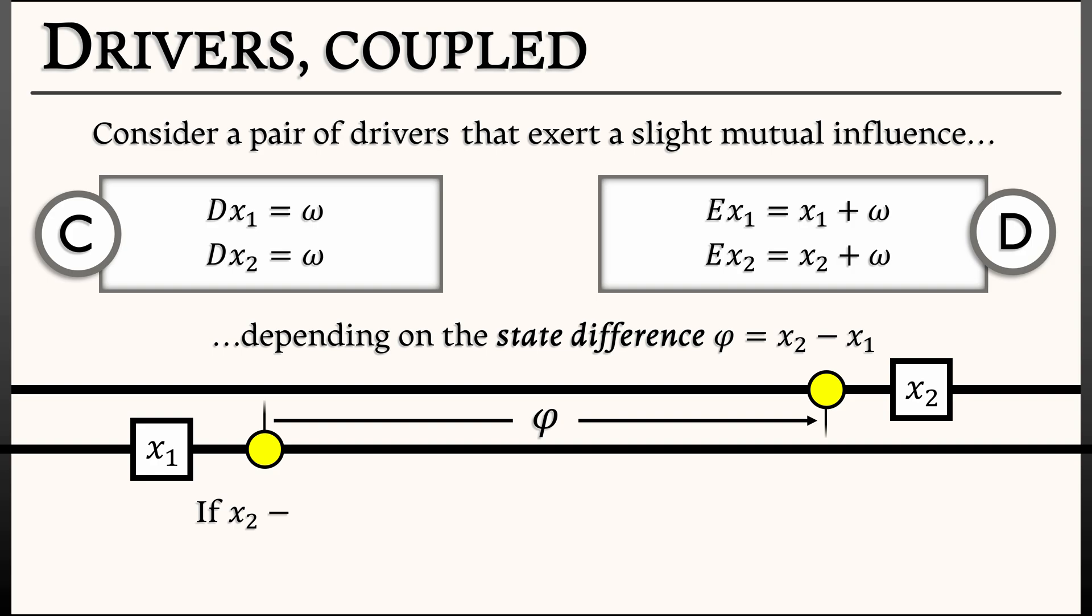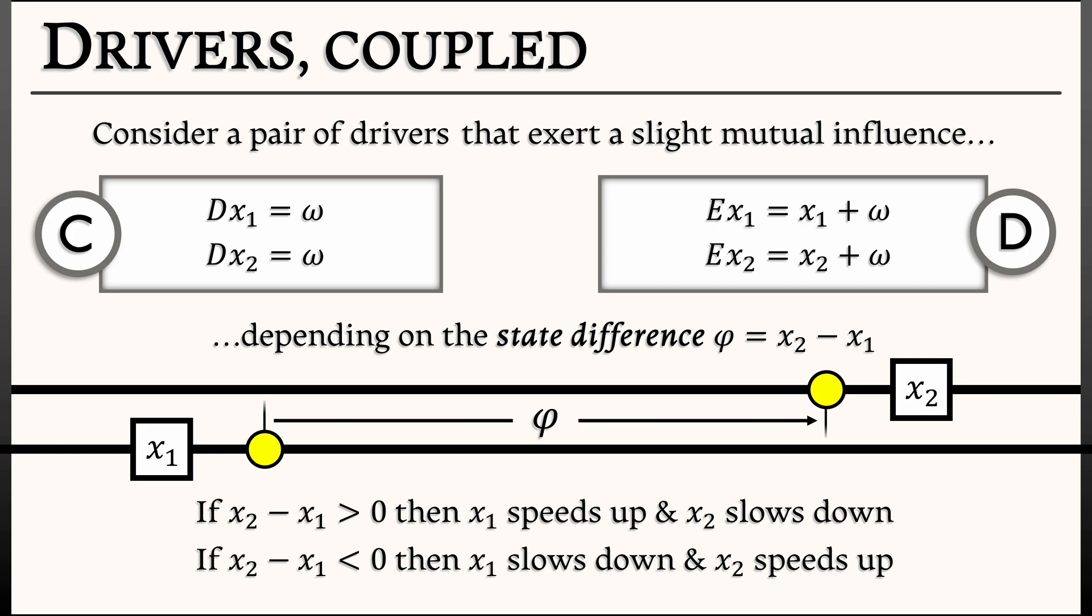So if that state difference is positive, then we want x1 to speed up a little bit and x2 to slow down a little bit. Whereas if that state difference is negative, then that means x1 is ahead of x2. So x1 should be slowing down a little bit, x2 should be speeding up a little bit. That's the idea.